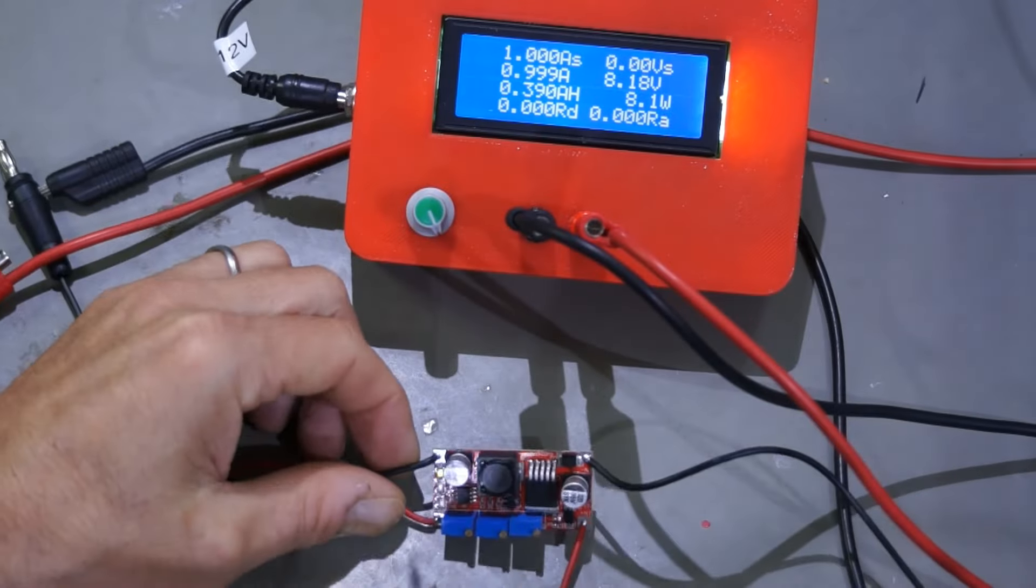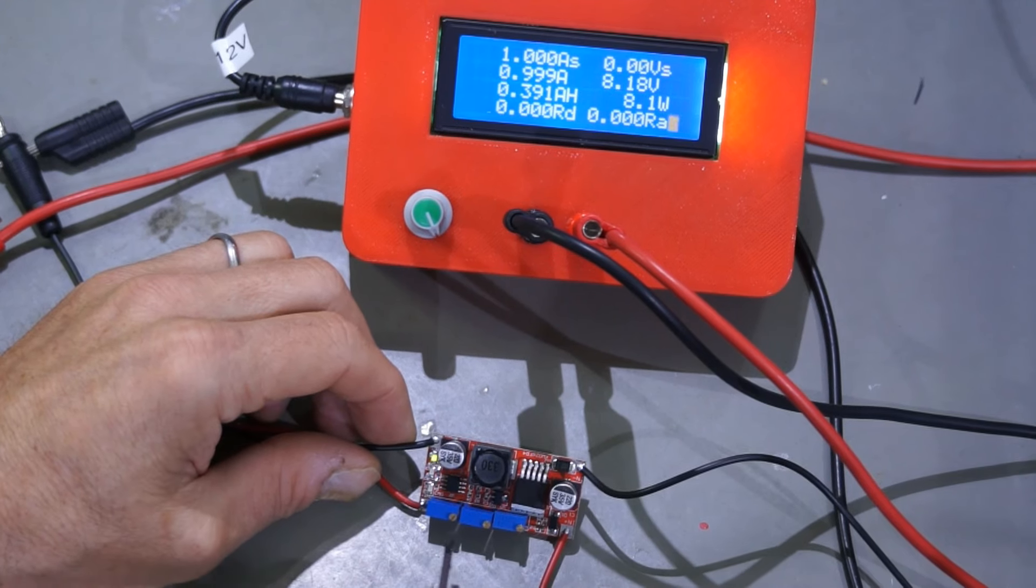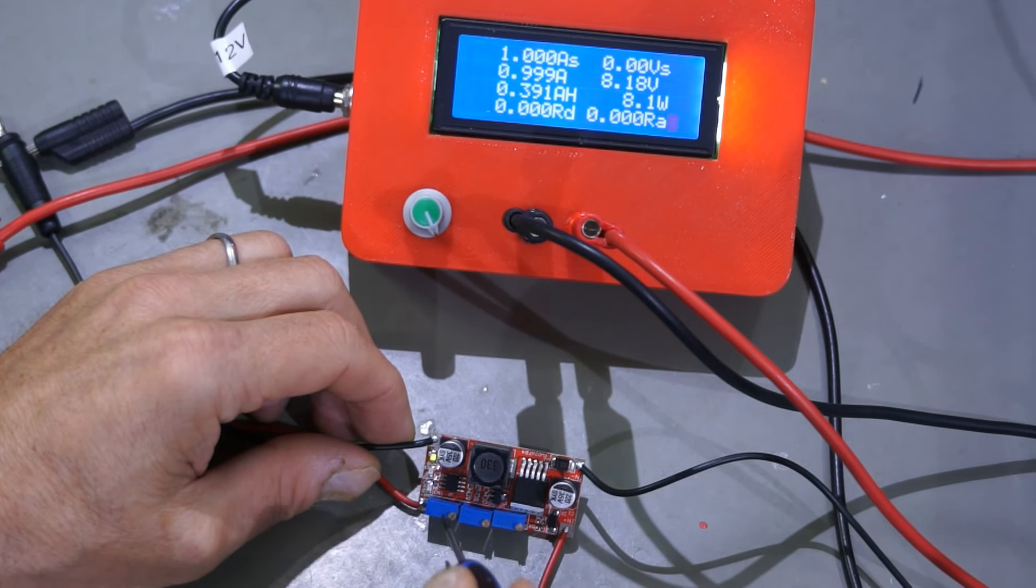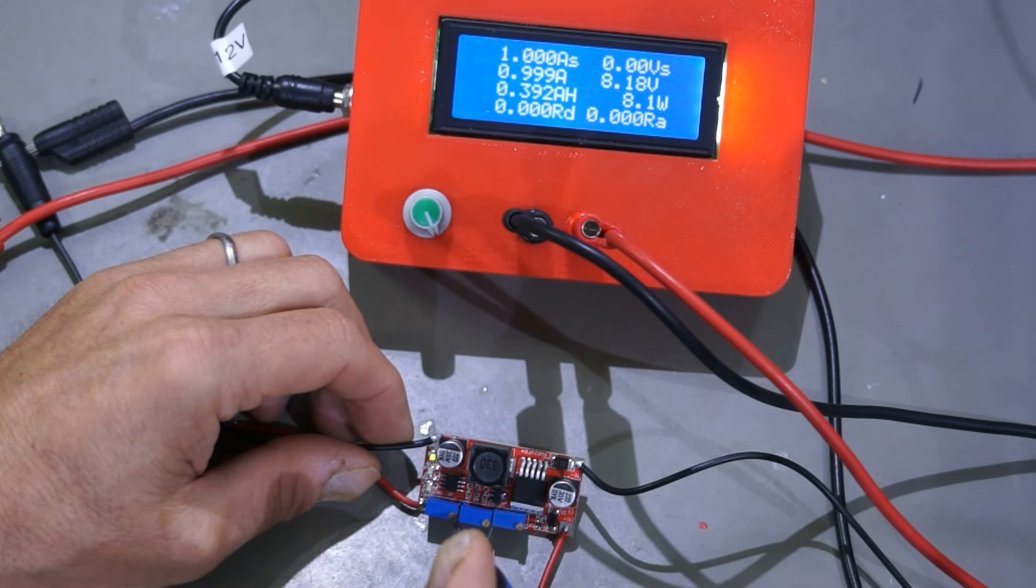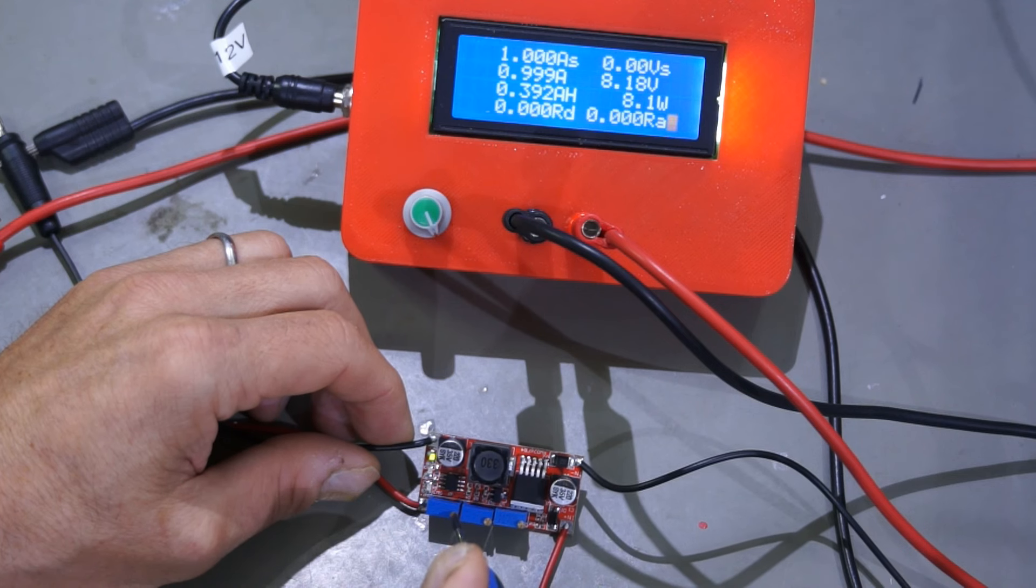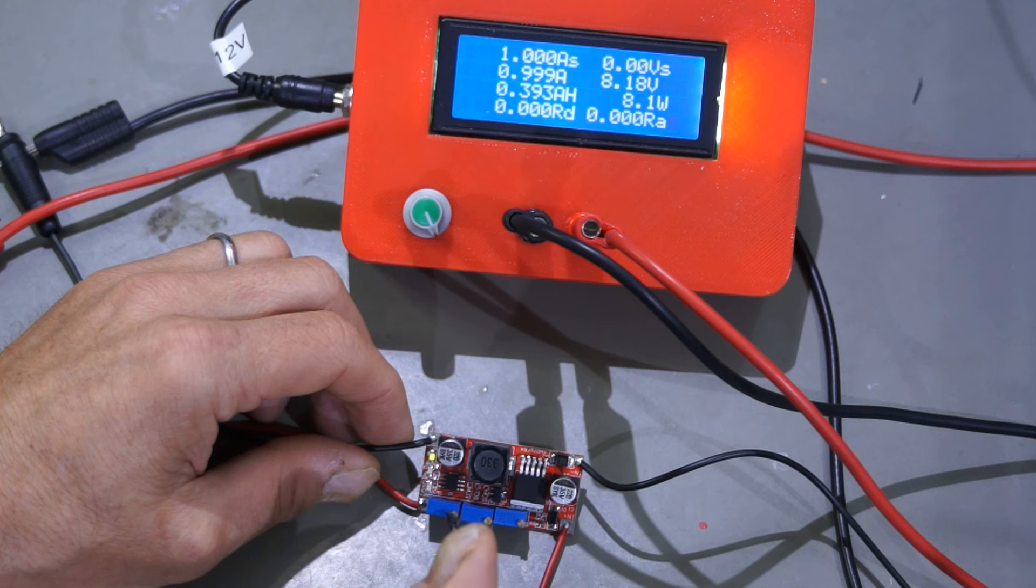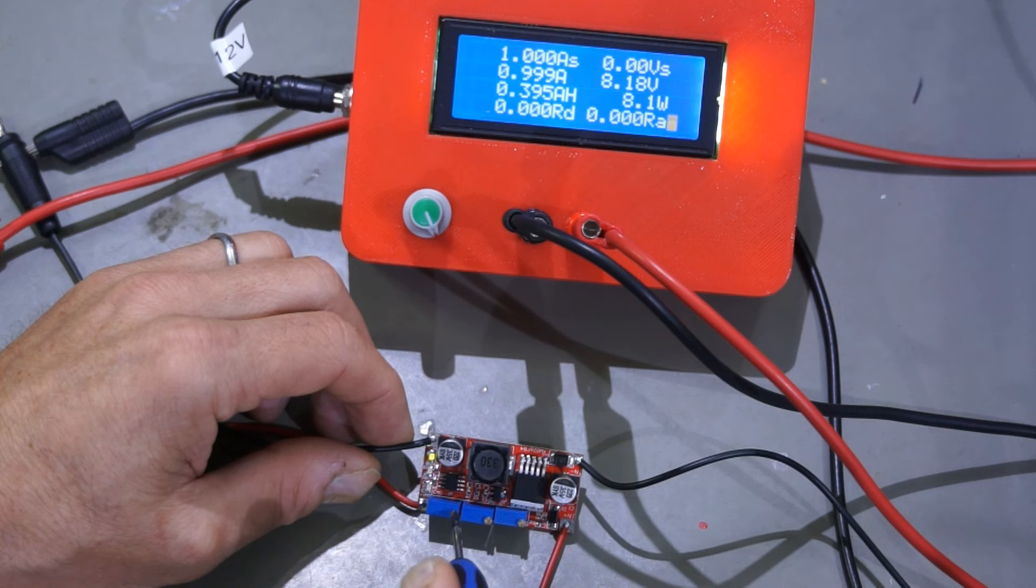To analyze the function of the middle trimmer, I connect the buck converter to a constant current load. Usually, this equipment is quite expensive. Fortunately, I found a module which is affordable. I post a link into the comment. It comes without enclosure, so I just printed one.